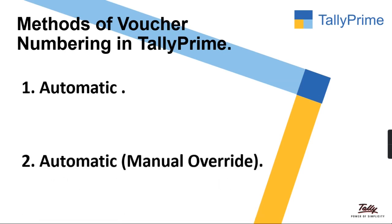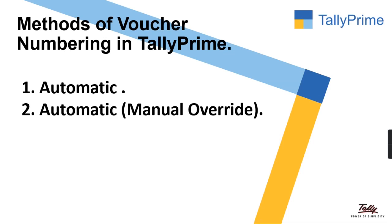The second method is automatic manual override. If you keep this method, Tally itself will provide the voucher number and it also allows the user to change the voucher number.